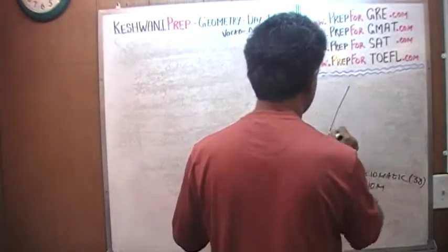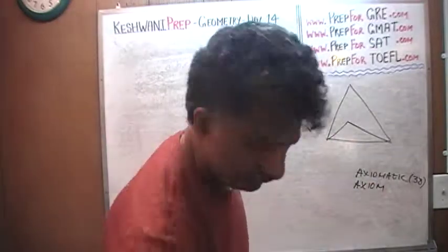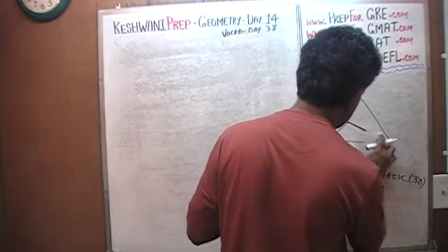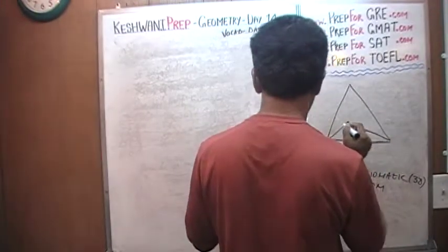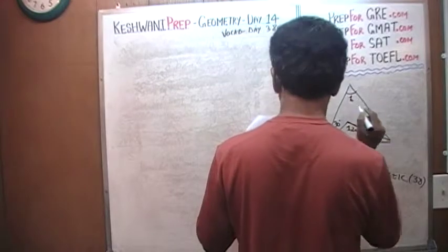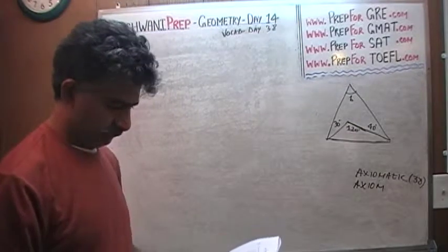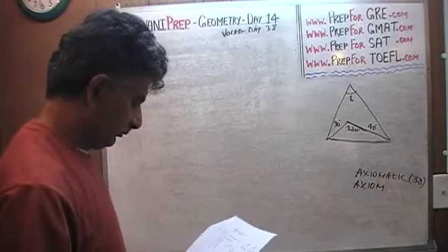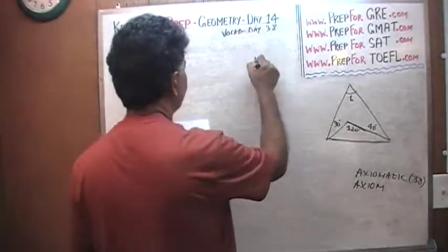This we are told is 120 degrees. This we are told is 30 degrees. This is 40 degrees. And the question simply is, how much is this angle B? Where did this B come from? I don't know. Why B? That's what they are calling it B. How much is B? I want you to pause the video and do the problem yourself. And once you have the answer, you can resume it.